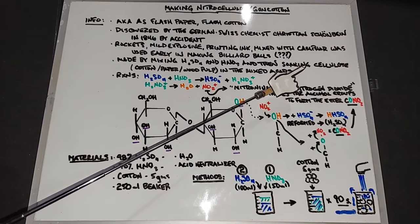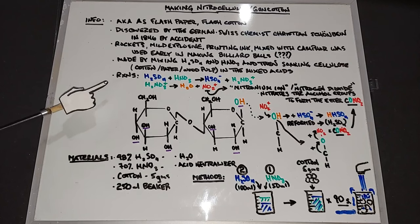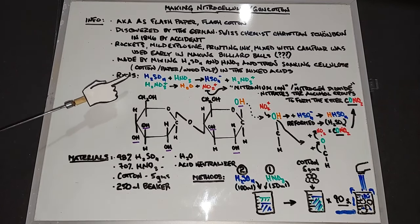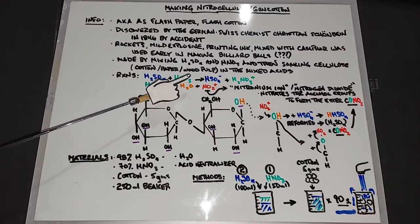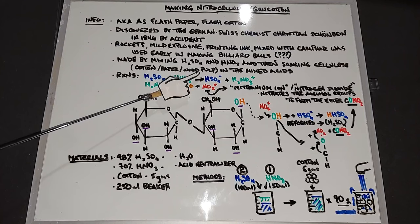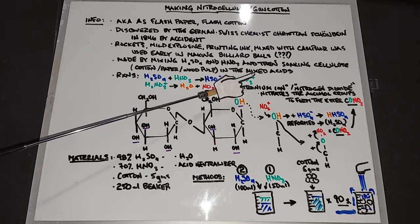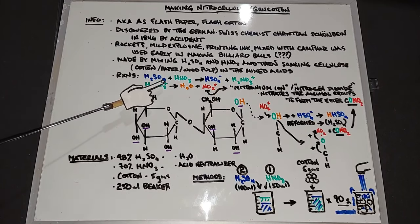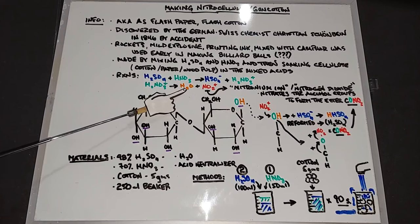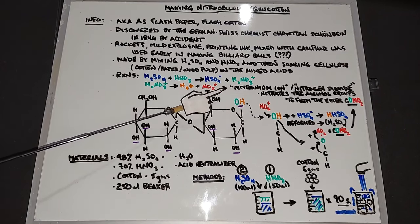There are several reactions that occur during the process of making gun cotton. The first one is simply mixing the sulfuric and nitric acids together. You end up with a proton switch, producing HSO4 negative and H2NO3 plus. Then the H2NO3 plus undergoes degradation into H2O water and NO2 plus, and this NO2 plus is a nitronium ion.